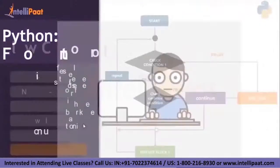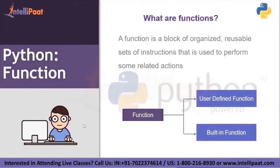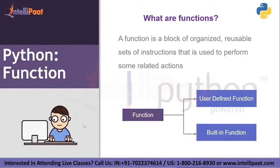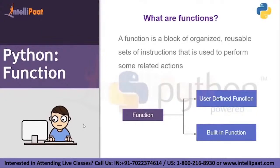So this was all about flow control. Let's proceed and learn about functions. A function is a block of organized, reusable set of instructions used to perform some related action. Why do you even need a function? If you have to write a program in which you use the same set of code again and again — for example, 40 lines of code appearing at 10 different places — rather than rewriting them every time, you use a function. This allows the reusability of code and minimizes redundancy. In Python, there are basically two types of functions: user-defined and built-in.